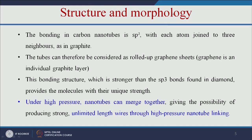Let us see the structure and morphology of carbon nanotubes. The bonding in carbon nanotubes is sp2, with each atom joined to three neighbours as in graphite. The tubes can therefore be considered as rolled-up graphene sheets, and this bonding structure is stronger than the sp3 bonds found in diamond. Also, under high pressure, these nanotubes can join together and form a nanowire.